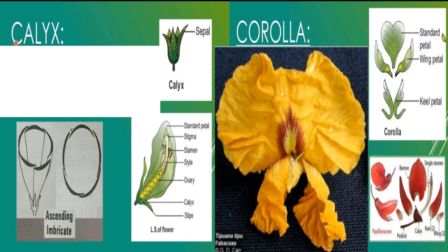Calyx consists of sepals. Generally they are five in number. They are usually gamosepalous and the odd sepal is always anterior in position. You can see the odd sepal which is always anterior in position. Estivation is ascending imbricate — imbricate means one completely in, one completely out, with three sepals in between.